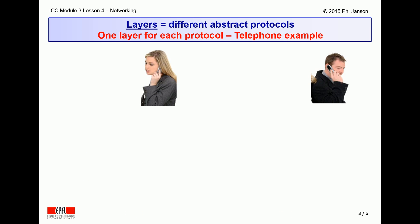The operation of a network does not depend on just one protocol. On the contrary, any network invariably involves a multiplicity of protocols, and these protocols are layered on top of one another, each layer providing a different, higher level of abstraction. To illustrate this layering and show the different levels of abstraction, let us consider the well-known case of a plain telephone network.